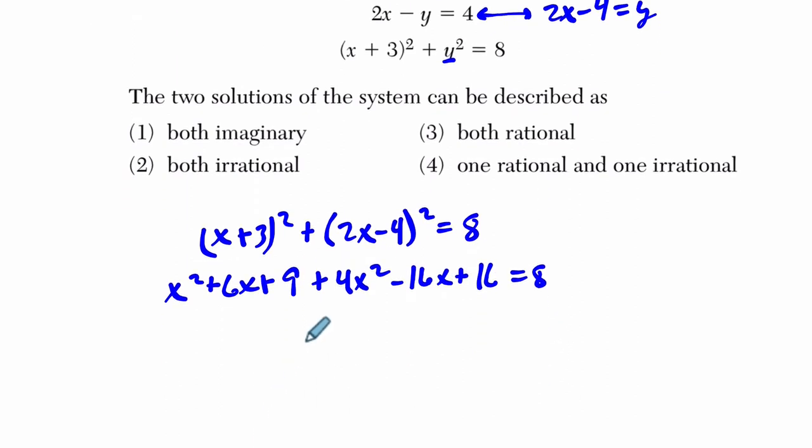And then I'm going to simplify this. 4x² + x² is 5x². And then 6x - 16 is -10x + 9 + 16 is + 25 = 8, and I'll subtract 8 from both sides. So 5x² - 10x + 17 = 0.